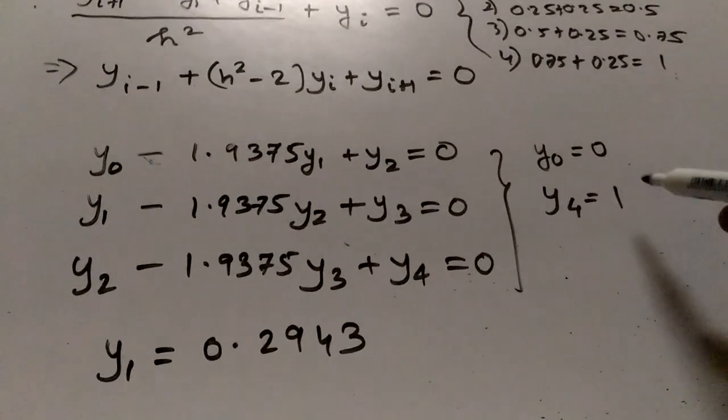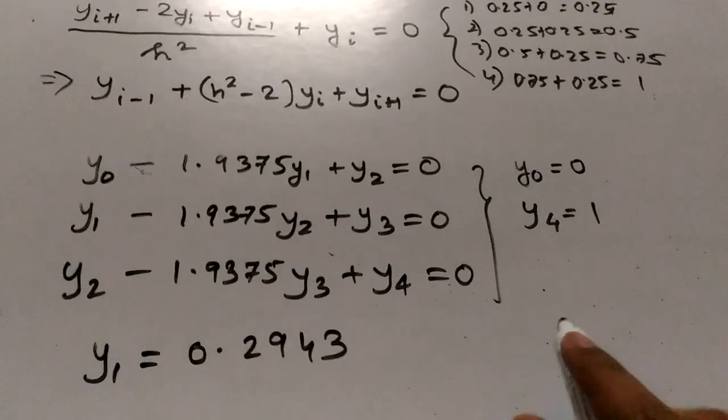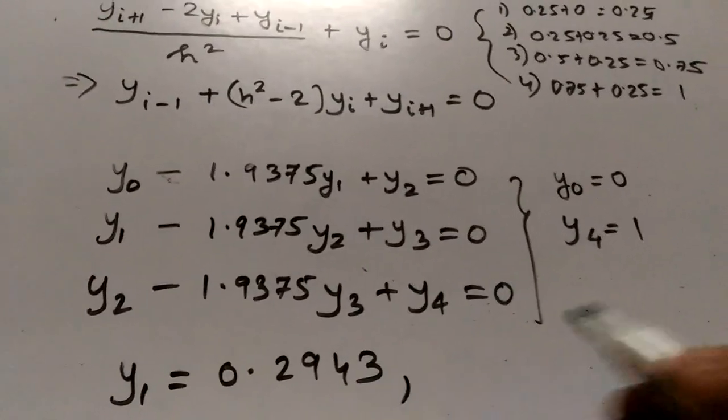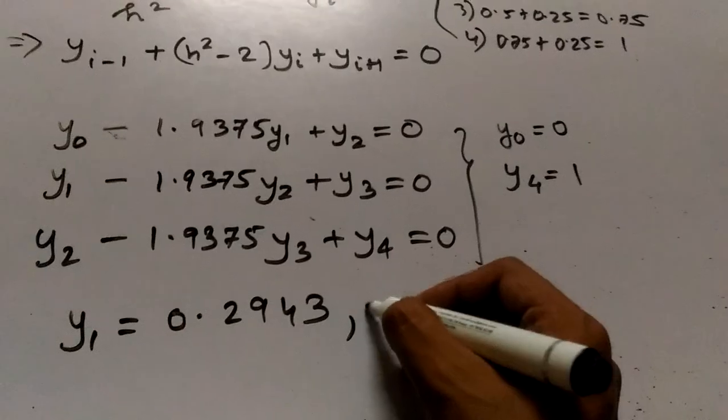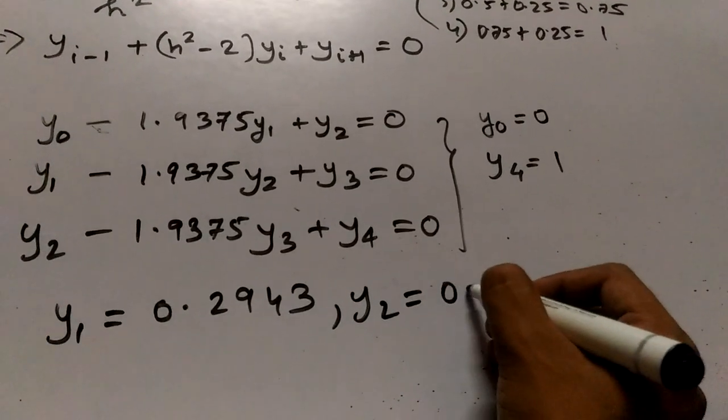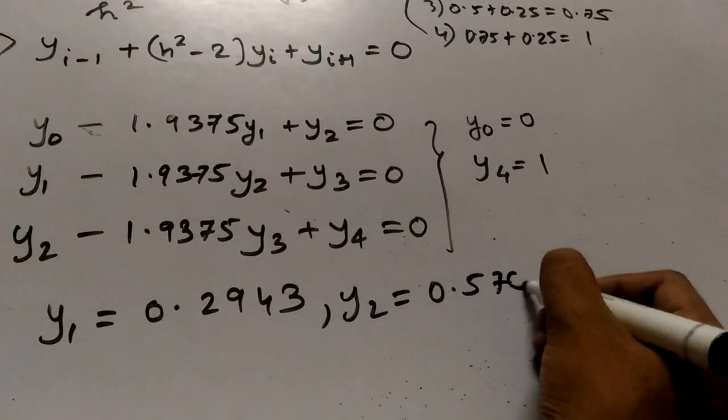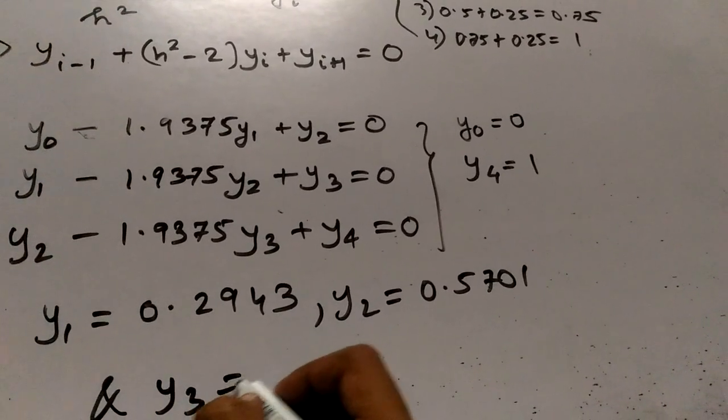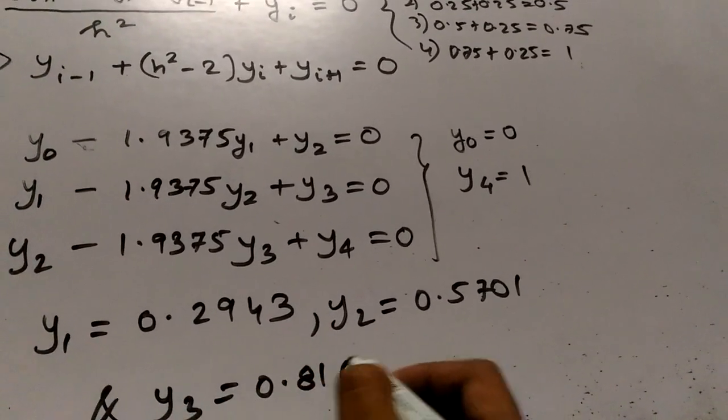Putting these values we can solve the equations very easily. Now we will get y_1 as 0.2943, y_2 as 0.5701, and y_3 is 0.8108.